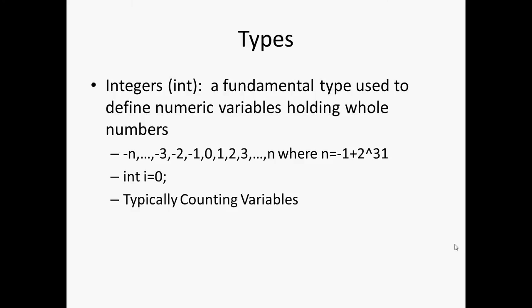So the first type that you're going to see is something called an integer. It'll be seen as int, and it's just a fundamental type used to define numeric variables holding whole numbers. So basically it'll be like negative 3, negative 2, negative 1, 0, 1, 2, 3. It won't be fractions or decimals. It'll be whole numbers, positive and negative, and 0. And there's this thing right here where n equals this right here. We'll get into this later, but for now just keep that in the back of your mind.